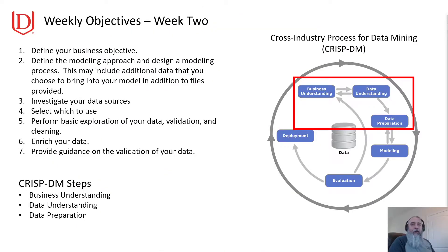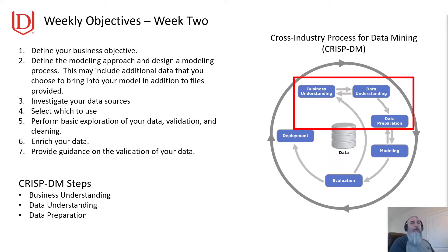We've talked about this before — we're going to start with the Cross-Industry Process for Data Mining, the CRISP-DM platform, which is really what we use. Of the three weeks, the first week we're going to talk about here is focused on the first three phases: business understanding, data understanding, and data preparation. In the following week we'll talk about modeling and evaluation, and then finishing up in the third week with deployment. This is week two of the course for those following along. The business objectives for this block are to define the business objective, define the modeling approach we're going to use, and design a modeling process that goes along with that approach.